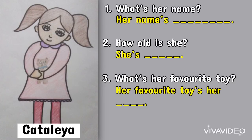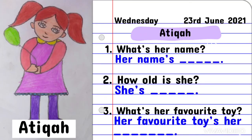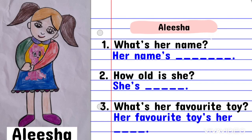Well done. I hope you are able to answer the questions correctly. For today's task, I want you to copy the questions and answer the questions correctly in BI1. Don't forget to check your spelling and also make sure you put a full stop at the end of every sentence. Please submit the task to me when you are done.